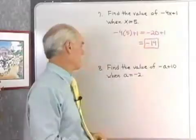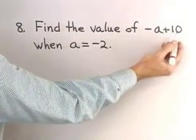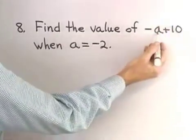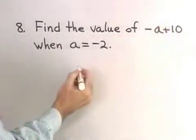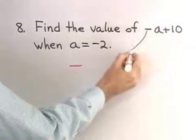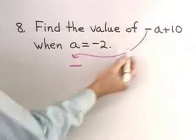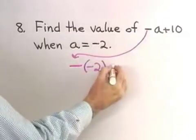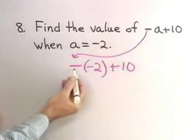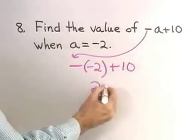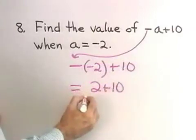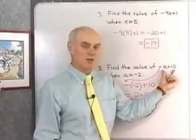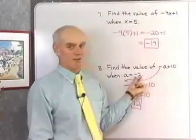Here's another one of those problems. Find the value of negative a plus 10 when a is negative 2. So, I want to rewrite this expression with negative 2 in place of a. So, here's my negative sign that's in the expression. Now, a itself is negative 2. So, there's the negative 2 that a is, plus 10. The opposite of negative 2 is 2, plus 10. So, I end up with just 12. So, this expression turns out to be 12 when a is equal to negative 2.